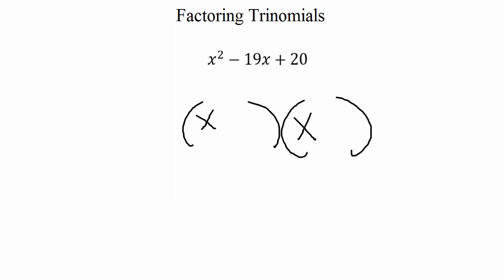So then we can move on to our last term. After looking at our first term, we move to our last term. And our last term is a 20. And what we need to think about is, what are all the possible numbers that can multiply together to get 20?